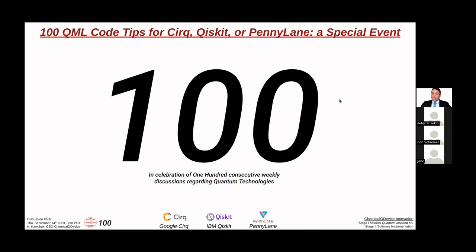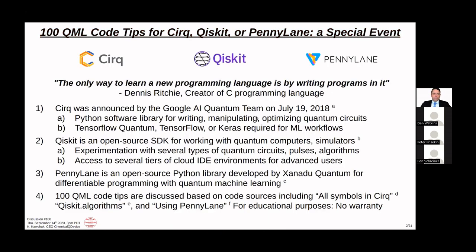QML stands for quantum machine learning, and it's believed that this will be the principal application for quantum computing. I love this quote: 'The only way to learn a new programming language is by writing programs in it.' A lot of these are very customizable. This is by Dennis Ritchie, creator of the C Programming Language. Google CIRQ was announced in 2018.